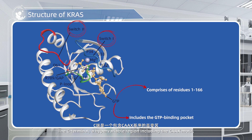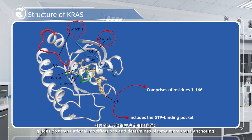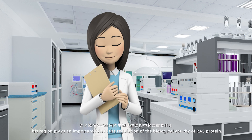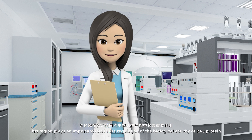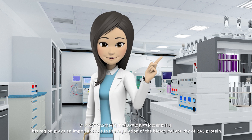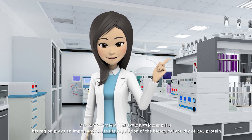The C-terminal, a hypervariable region including the CAX motif, guides post-translational modifications and determines plasma membrane anchoring. This region plays an important role in the regulation of the biological activity of RAS protein.